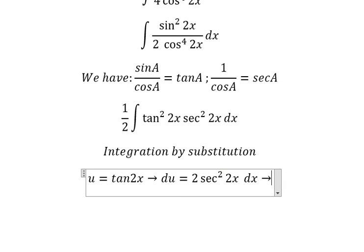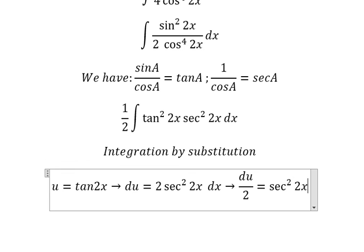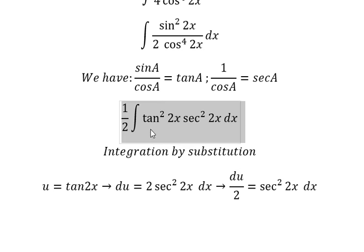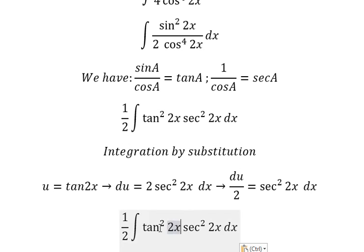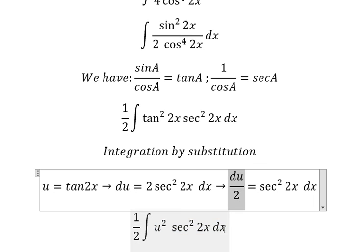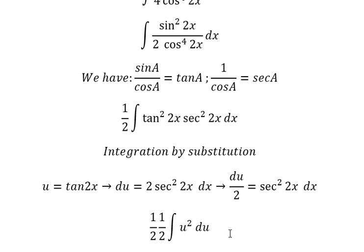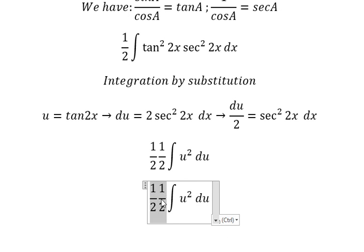We have dU equal to 2 secant squared 2x dx. Because we don't have the number 2 here, we need to divide both sides by 2. Then tan 2x we replace with U, giving U squared. Secant squared 2x dx we replace with this expression. This gives us 1 over 4 times the integral of U squared.